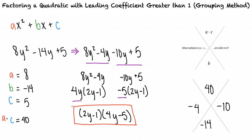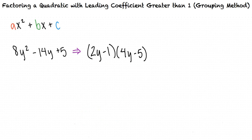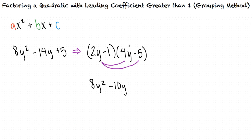That was a lot of steps. How do we know we didn't make any mistakes? To check our work, we can multiply our two factors together and make sure that we get the original quadratic expression we were given. Using the FOIL method, we'll multiply 2y times 4y to get 8y squared, then multiply 2y times negative 5 to get negative 10y. Next, we'll multiply negative 1 times 4y to get negative 4y, and finally multiply negative 1 times negative 5 to get positive 5.